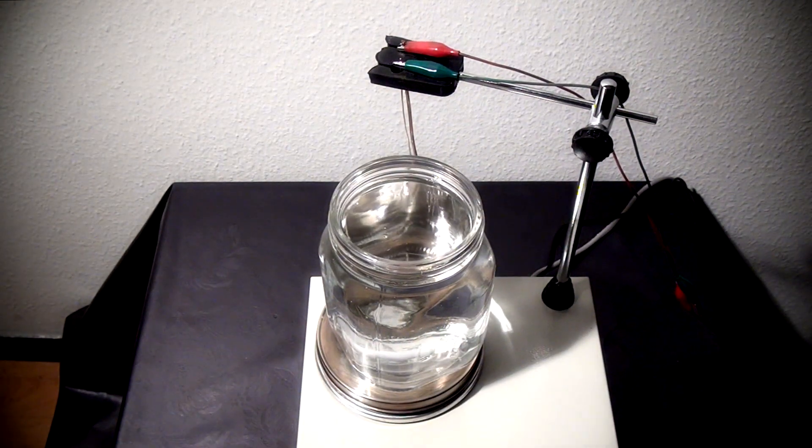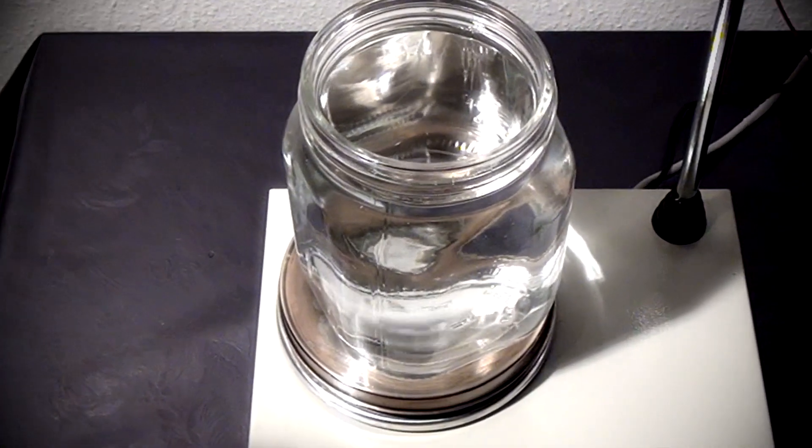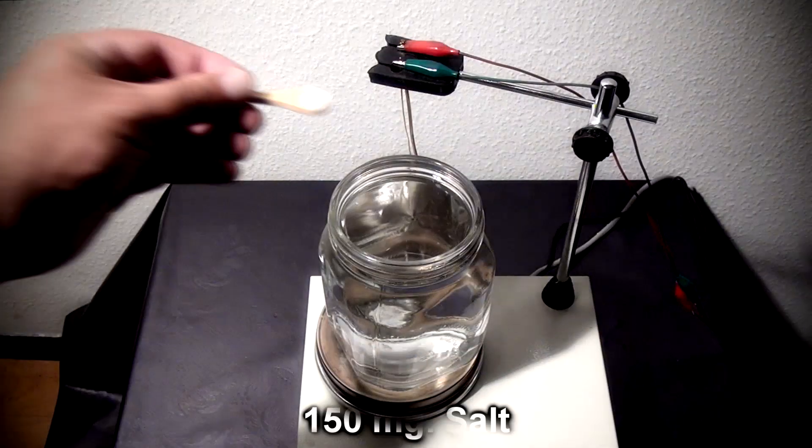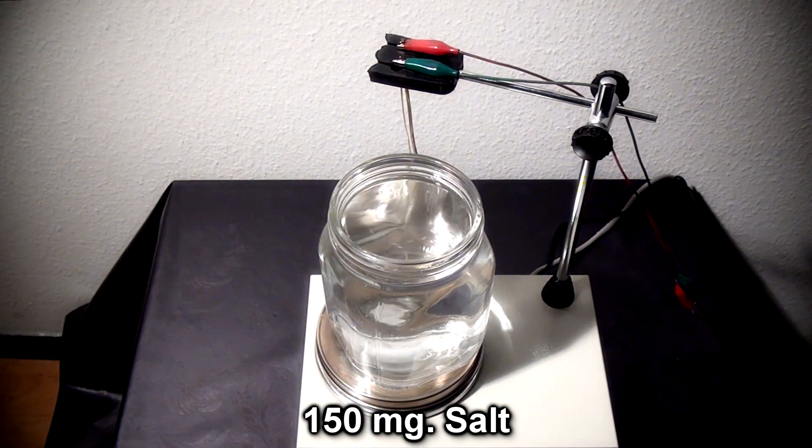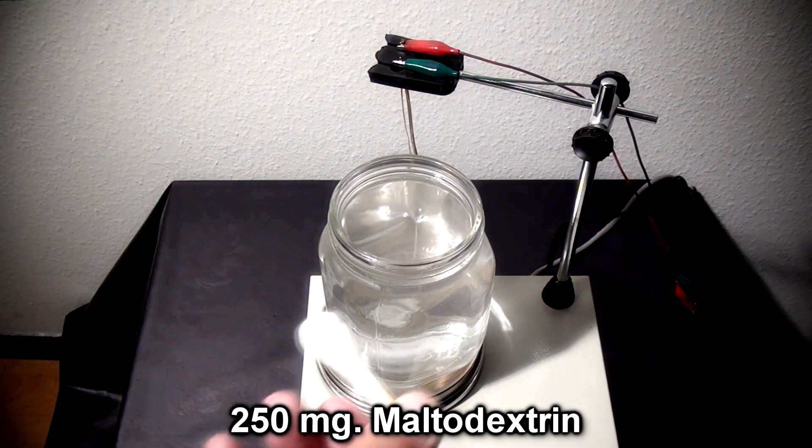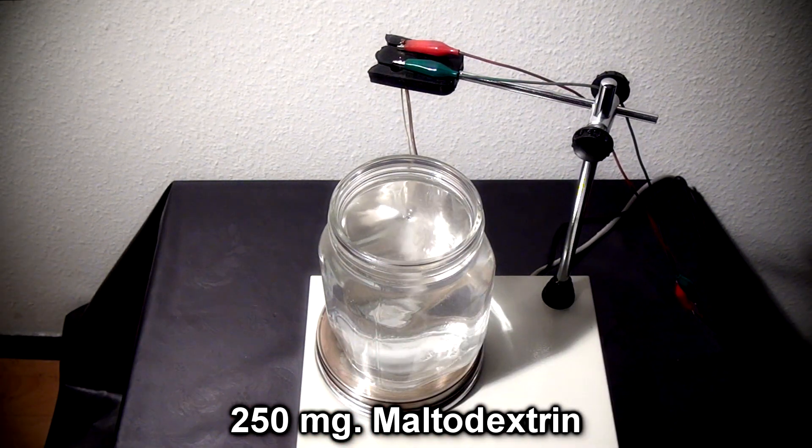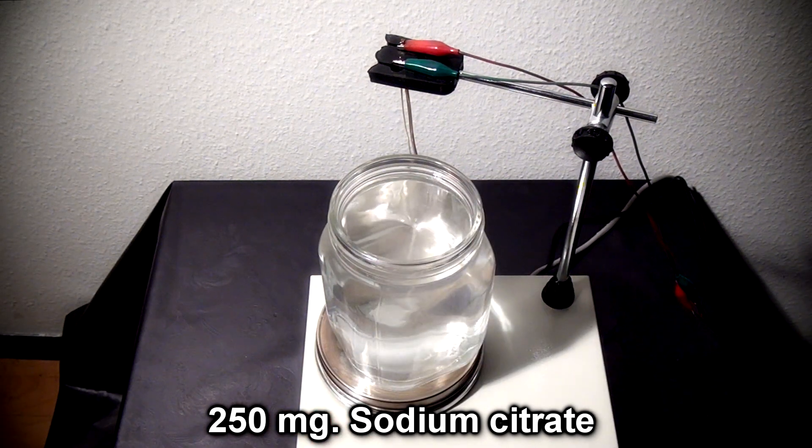I gently insert the magnetic stirrer into the glass and screw the magnet motor up to 30%. Then add 150 milligrams of salt, 250 milligrams maltodextrin, and 250 milligrams sodium citrate.